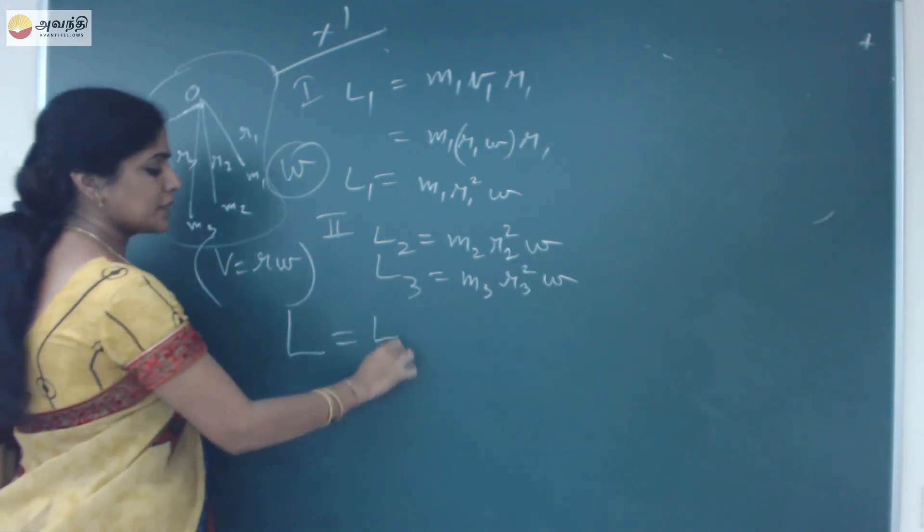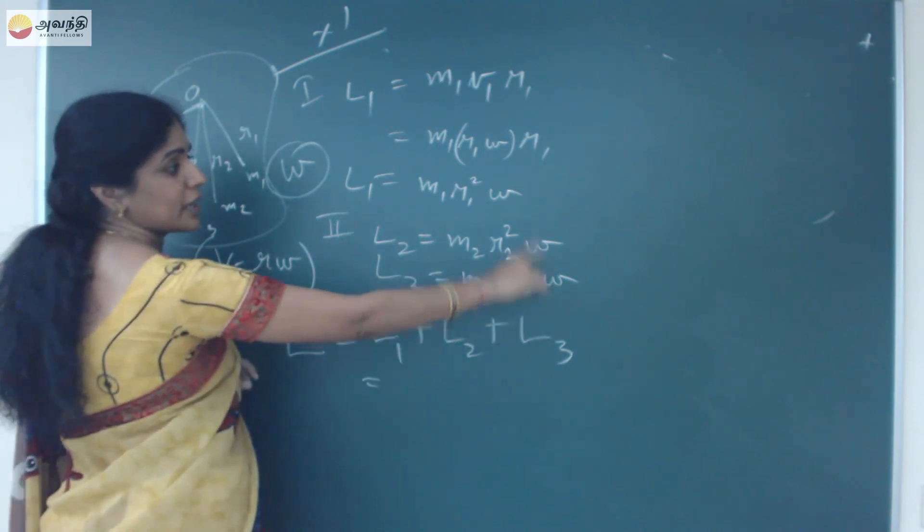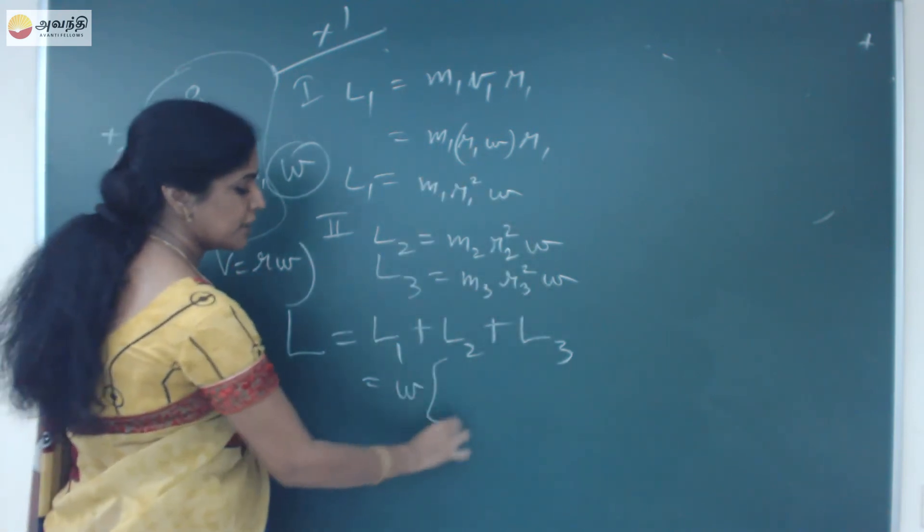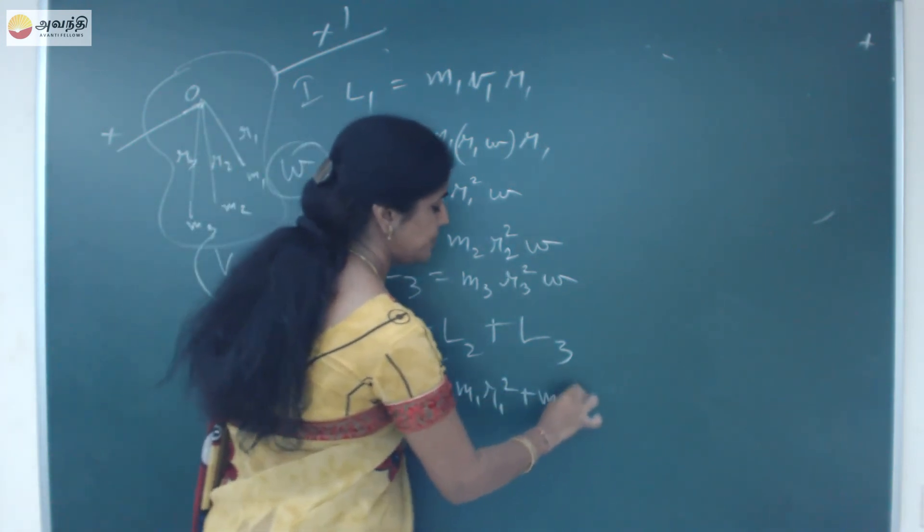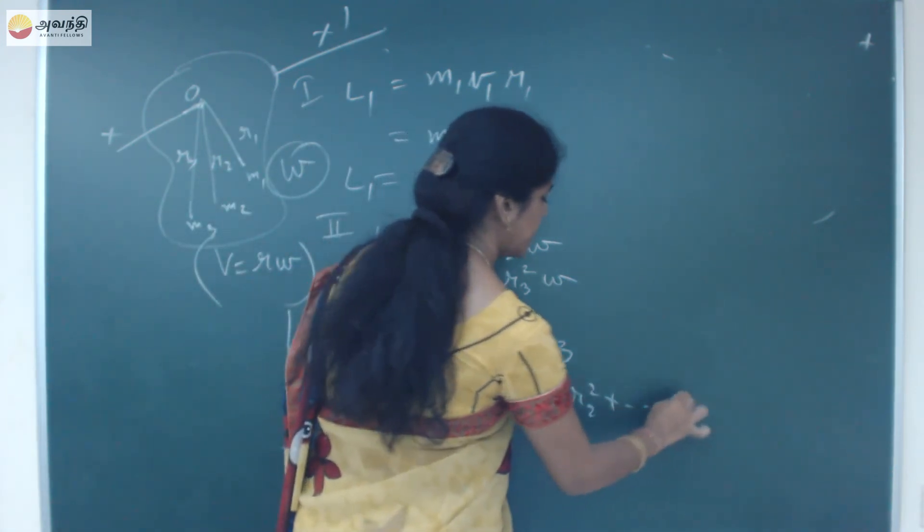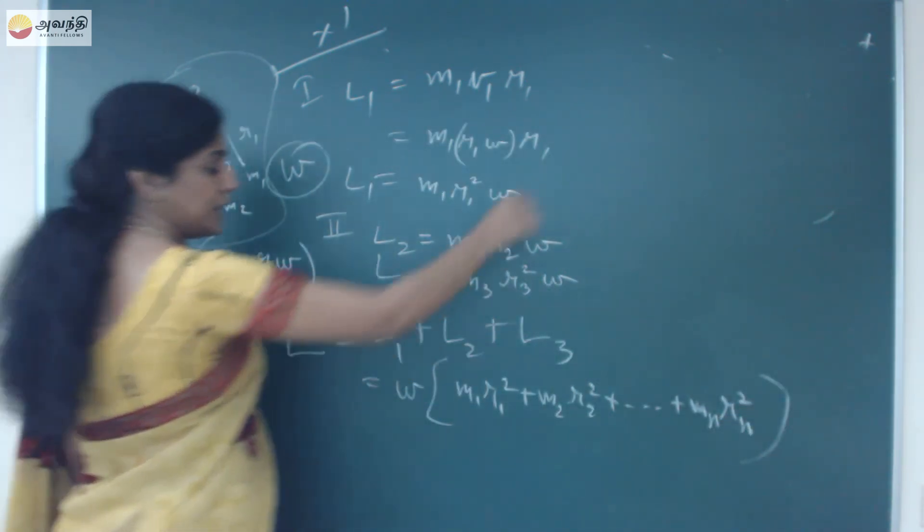So the total angular momentum is given by the sum of all the angular momentum. If you have all the same thing, it is omega. What do we do? We take omega out and add in a bracket: M1 R1 square plus M2, R2 square up to Mn, Rn square.